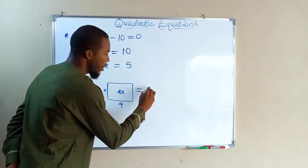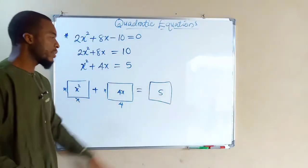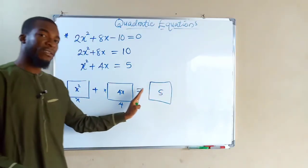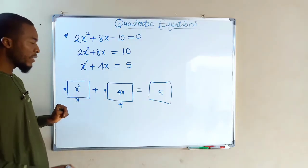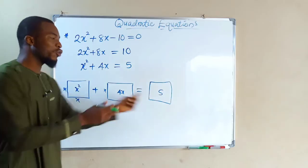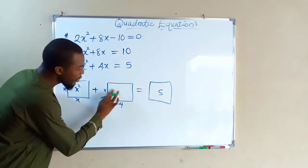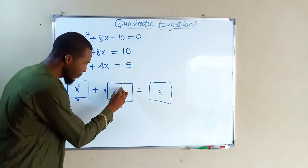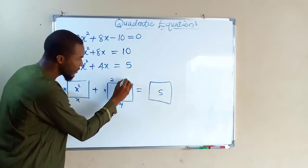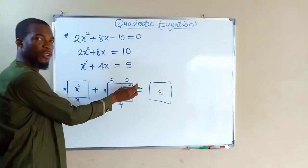On the right-hand side, we have a rectangle that represents 5, with an area of 5 units. The equality sign tells us what is on the right-hand side equals what is on the left-hand side, so we are free to add these two plane figures together. I want to divide the 4x rectangle equally, so each side becomes 2, since I have divided the length of 4 by 2.